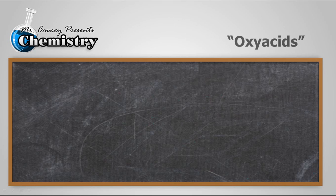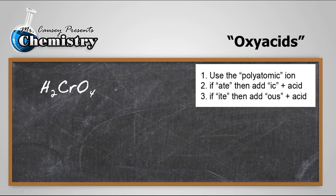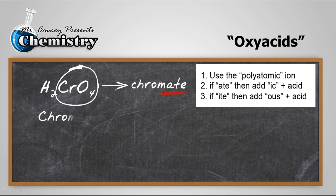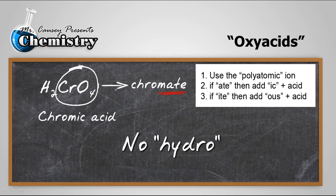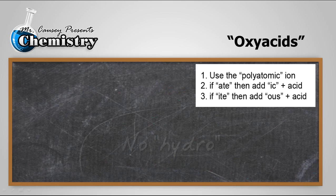How about oxy acids? Let's do hydrogen chromate dissolved in water. First, we use the polyatomic ion — in this case, that is chromate. Since it ends in A-T-E, we add 'ic' and the word 'acid': chromic acid. In oxy acids, there's no 'hydro' — just the name of the polyatomic ion.